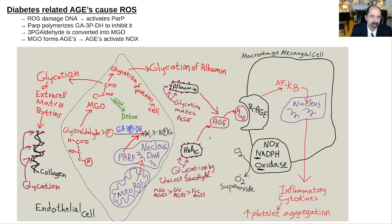Advanced glycation end products (AGEs) from previous diabetes lectures can also cause some oxidative stress, but that's a relatively minor point in this context.